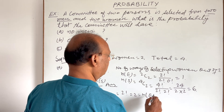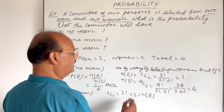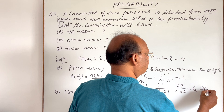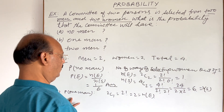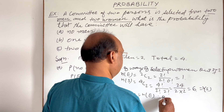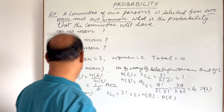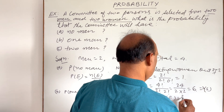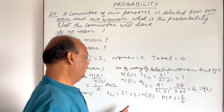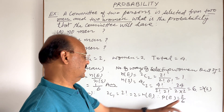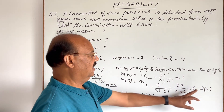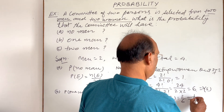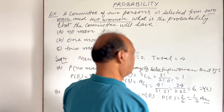This value of N(E) is 2 and N(S) remains the same, N(S) = 6. Therefore the probability of this event, where only one man is selected, is N(E) divided by N(S), which is 2 by 6, equal to 1/3. This is the answer of part B.